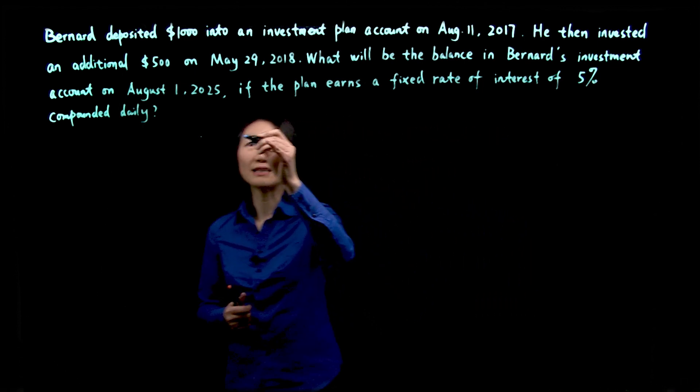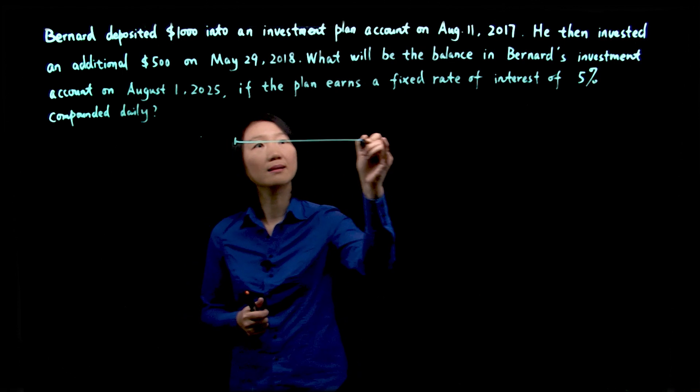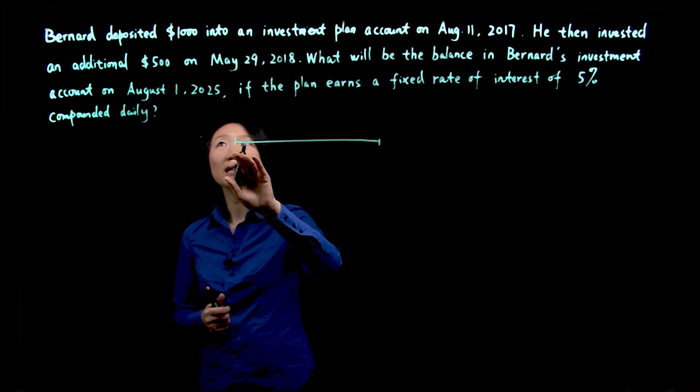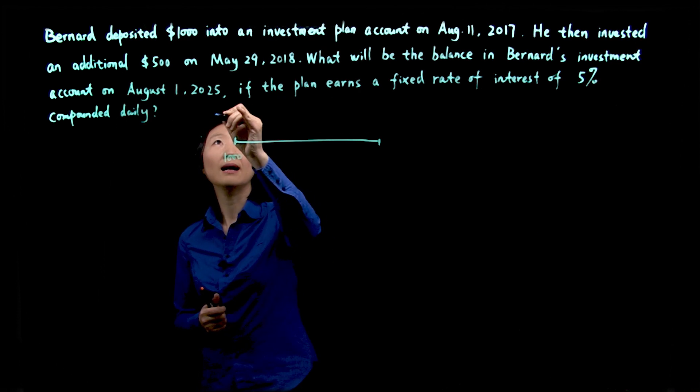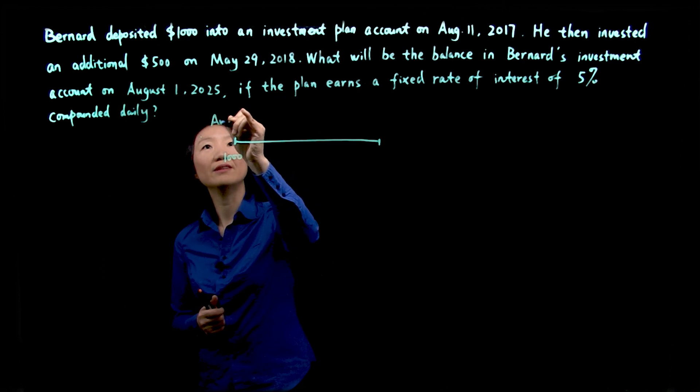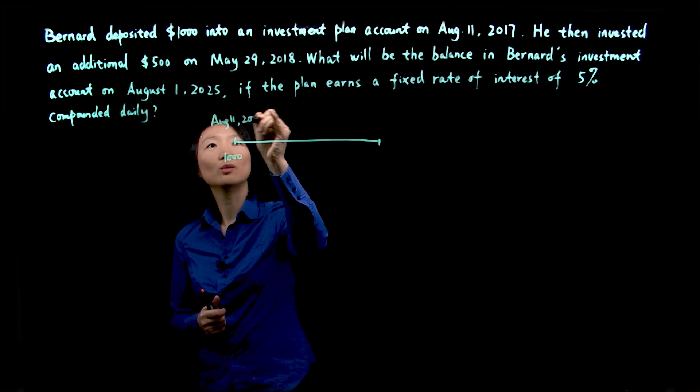Let's first draw a timeline. Bernard deposited $1,000 on August 11, 2017.